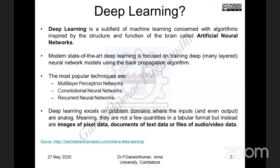Deep learning models excel on problem domains where the input data is unstructured. If the input data is in tabular, numerical form — like the iris flower dataset or disease data — the models from the first and second days of the MDP are useful. But if your data is unstructured or big data in the form of images, documents, audio, or video files, then one should go for deep learning.